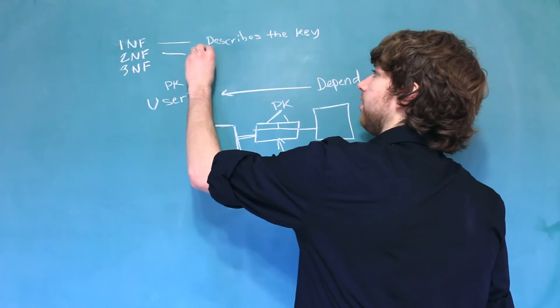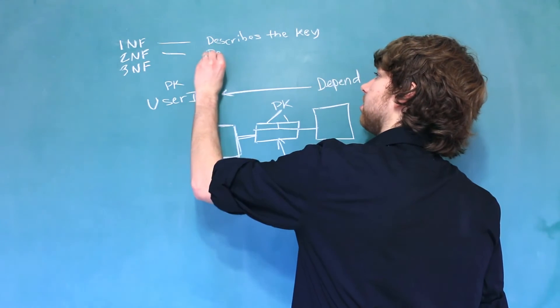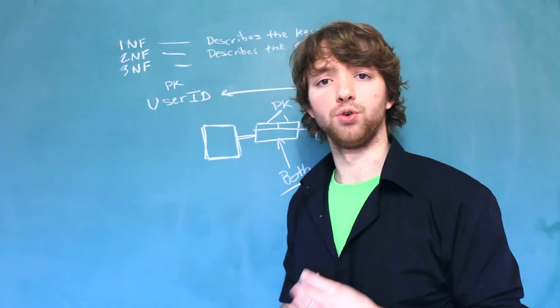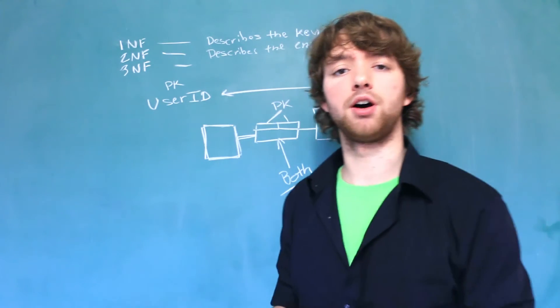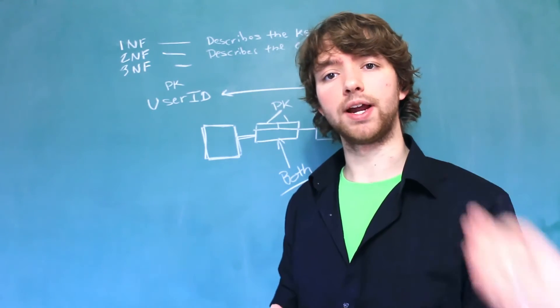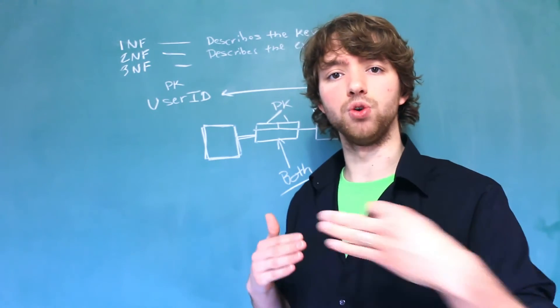So, second normal form, everything describes the entire key. Now, when we go into the grounds of third normal form, we're talking about columns that do depend on the key, but they depend on the key transitively, meaning through another column.